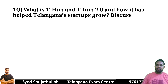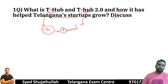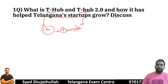The question on screen today is: 'What is T-Hub and T-Hub 2.0, and how has it helped Telangana startups to grow? Discuss.' Students will understand they have to write about T-Hub and T-Hub 2.0 — this almost takes one full page and crosses seven minutes. The key issue is knowing how much to write for each area. Whenever a question says 'discuss,' the examiner wants you to write a summary of that topic.